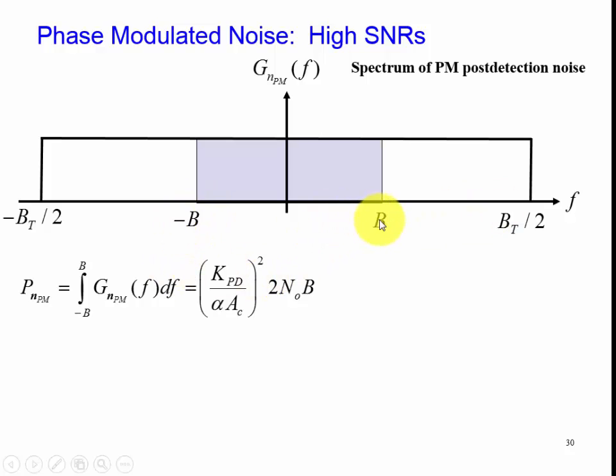What's left over is minus B to B. So we integrate that. We have this constant term integrated. Hence, we have, basically, 2B. Since this expression for G sub N sub PM is not a function of frequency, since it's a constant, we just have KPD over alpha AC quantity squared multiplied by N0. Then, the 2B appears as a result of this integration. So, in essence, the area of this rectangle is this result.